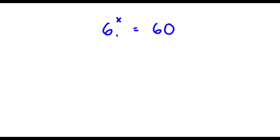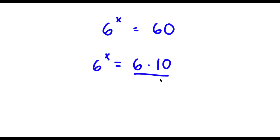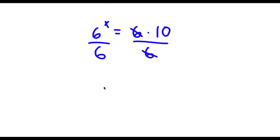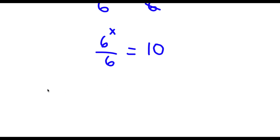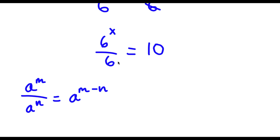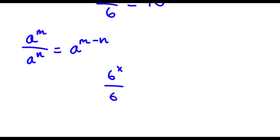Alright, so I have 6 to the power of x is equal to 60. The first thing I'm going to do is rewrite 60 as 6 times 10. So now I have 6 to the power of x is equal to 6 times 10. Now I'm going to divide both sides by 6, so those two cancel out. I'm left with 6 to the power of x over 6 is equal to 10. Now if I have something in the form a to the power of m over a to the power of n, this is equal to a to the power of m minus n. So 6 is the same thing as 6 to the power of 1.